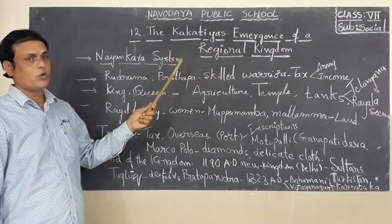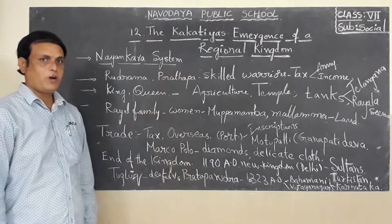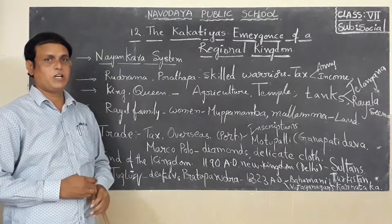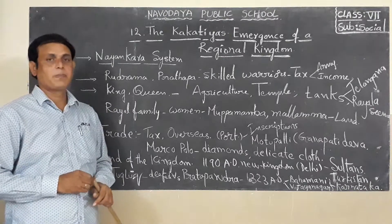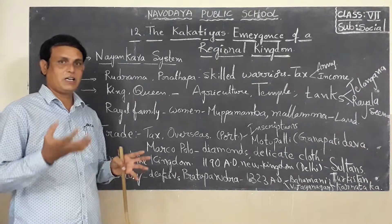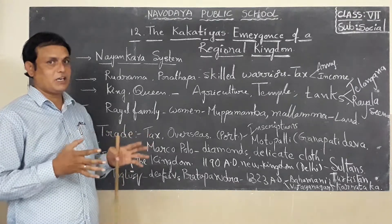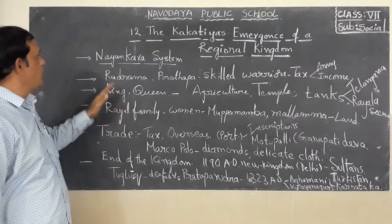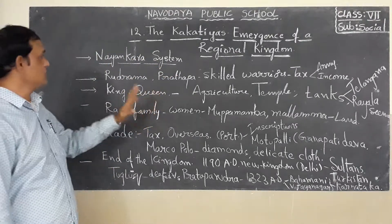Who are the Kakathiya rulers and who are the important persons among them? Rudramadevi was a very important ruler in the Kakathiya kingdom. She fought bravely against enemies who revolted against her, and she established and ruled the kingdom. Now in this lesson, let us look at the remaining part.